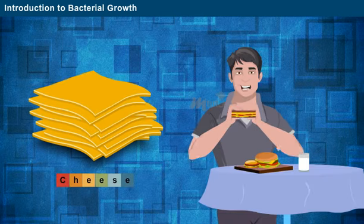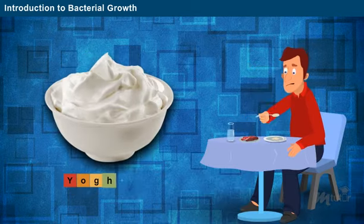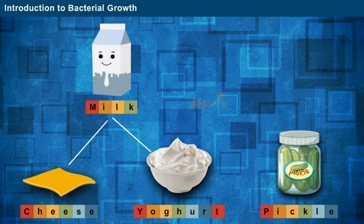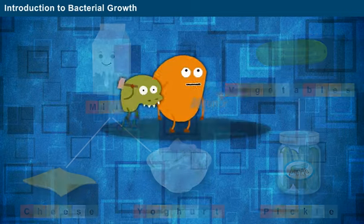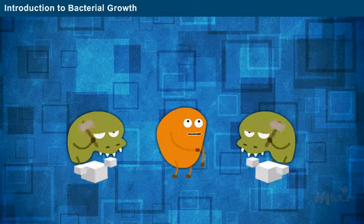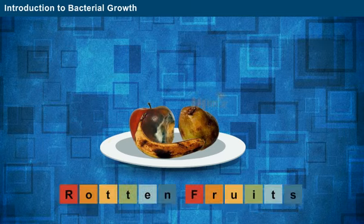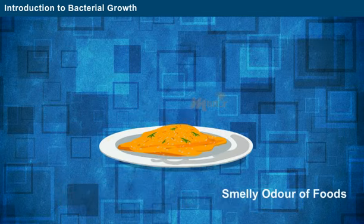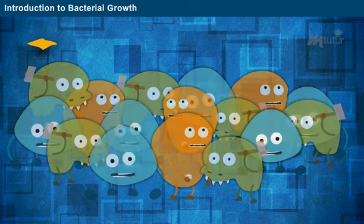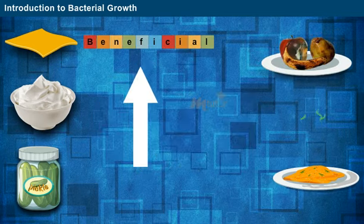Delicious Cheese, Spicy Pickle, Yummy Yogurt. These tasteful foods are formed by the fermentation of milk and vegetables by tiny organisms called bacteria. The bacteria break down the sugars in the food to get the nutrients for their growth. On the other hand, rotten fruits and smelly odour of fruits are the effects of bacterial growth. Thus, it is clear that bacterial growth can either be beneficial or harmful.